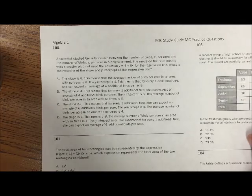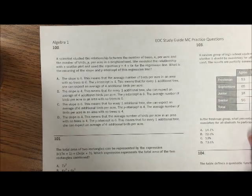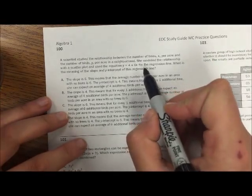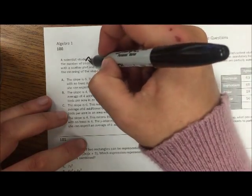The scientists study the relationship between the number of trees per acre and the number of birds per acre in a neighborhood and model the relationship using 4 plus 6x. So x is acres and y is birds.